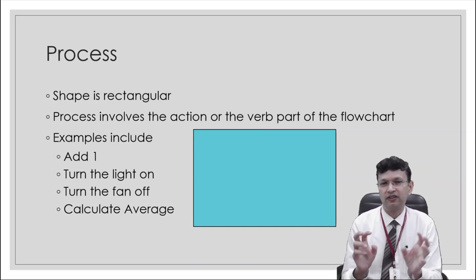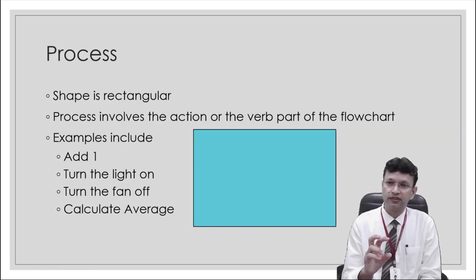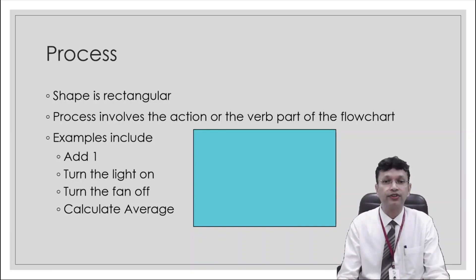Now a flowchart like all the actions which are being done in the algorithm will be represented here. The shape is rectangular. Process involves the action or the verb part of the flowchart. Examples are like add 1. If it is a machine like turn the light on, turn the fan off, calculate average, etc.